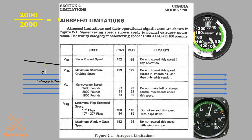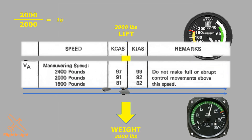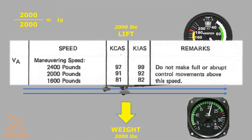By slowing down to this speed, we are able to pull back abruptly, or experience a large gust of wind, and not worry about causing damage to the aircraft before we experience a stall. The limitations section of the POH also lists the speeds where this is possible — we're looking for maneuvering speed, VA. At our current weight of 2000 pounds, it's 92 knots. Notice that it's lower at lower weights.